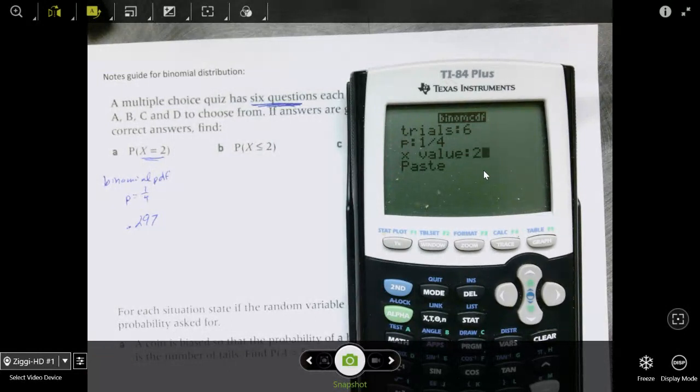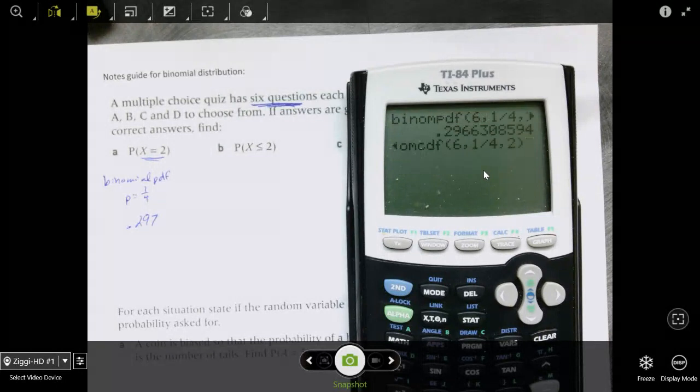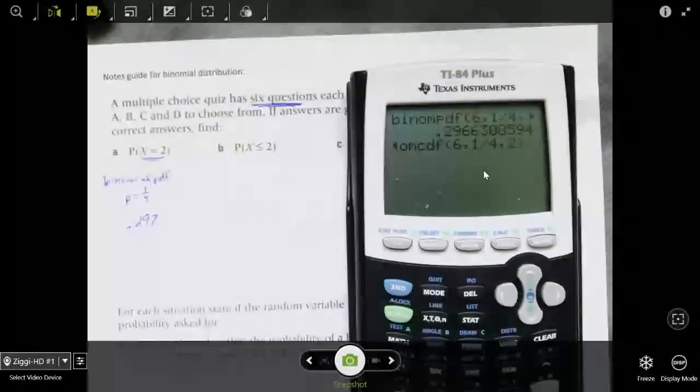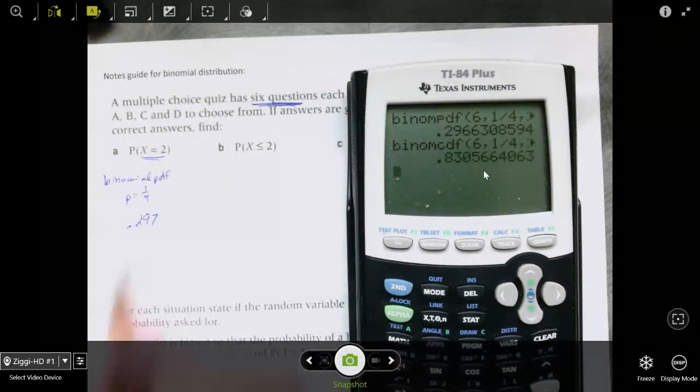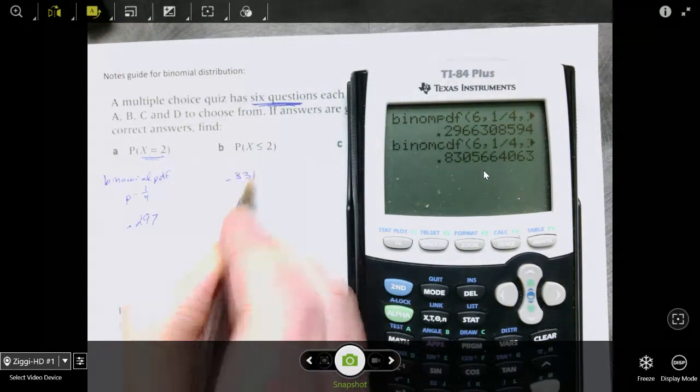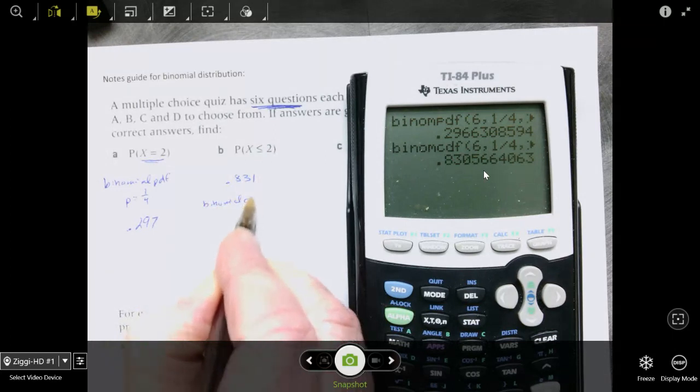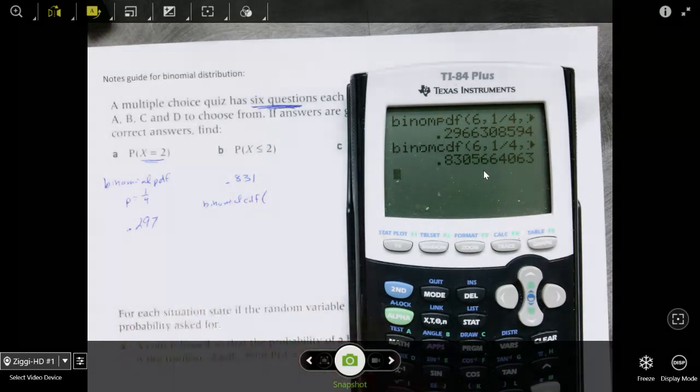If not, you have to do those all individually. Okay, so that is 0.831. Again, you might want to write down what goes in your calculator. So this number right here, how you're going to enter it. So 6, 1 fourth, and 2.